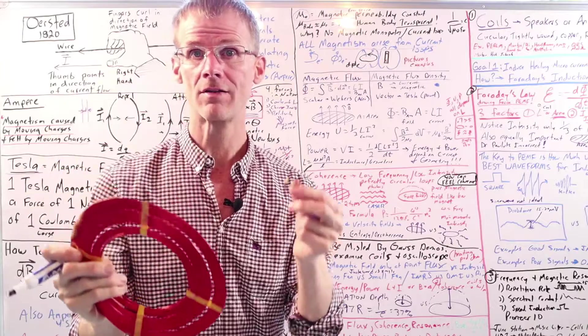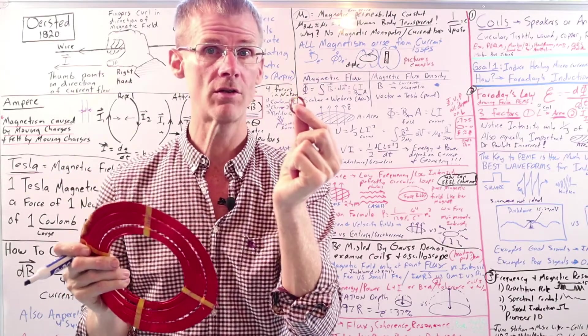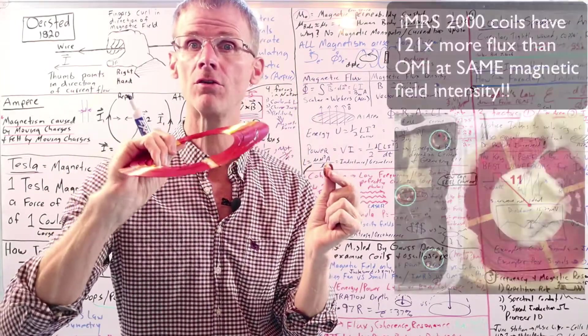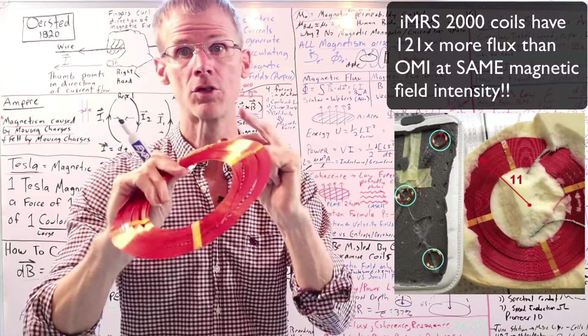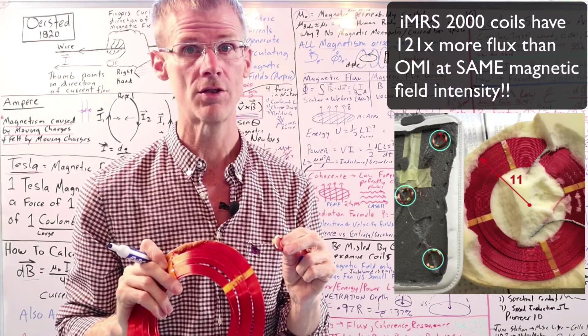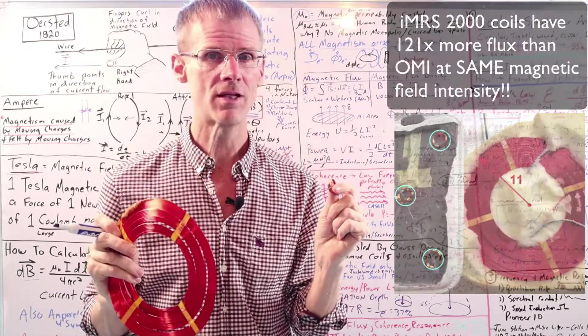But here's the thing, even though this is 20 microtesla and this is also 20 microtesla, this has 121 times more flux, which means 121 times more energy. So can you see how you can be misled with intensity?